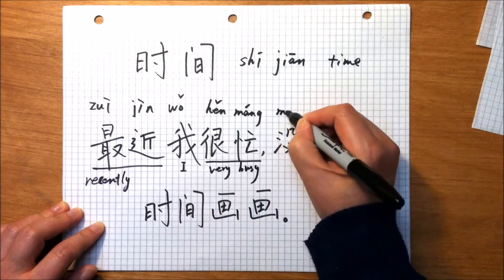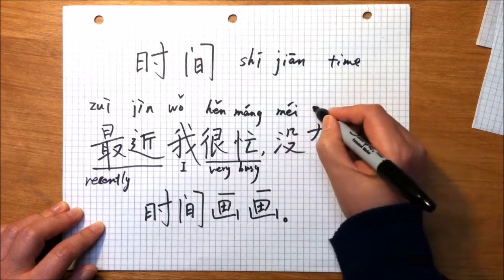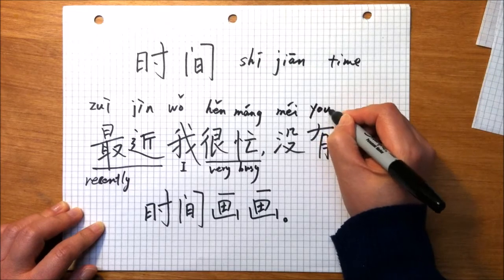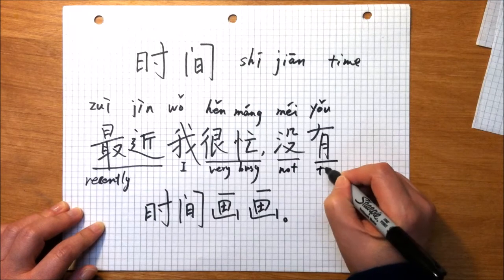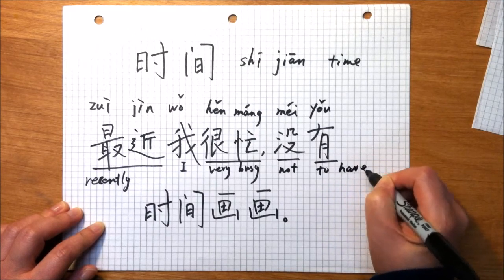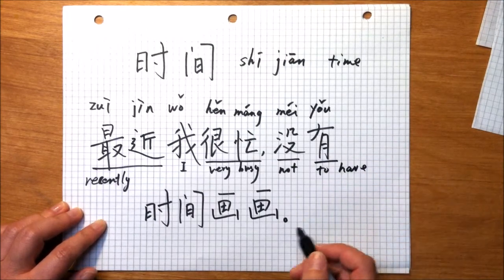没有. To have, 有. 没有, don't have. 时间, time.